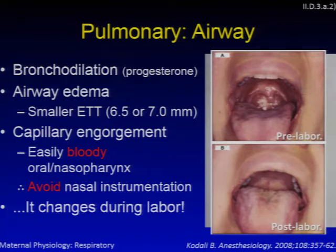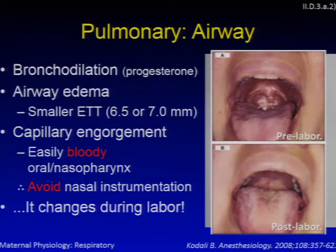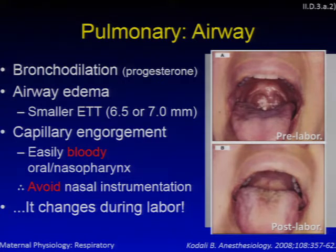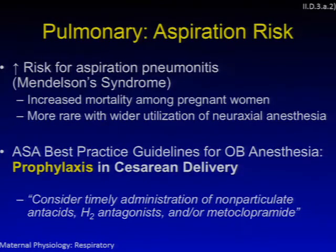Pulmonary and airway changes during pregnancy also change dramatically during labor. A figure shows a normal healthy non-preeclamptic woman whose airway exam before labor is very favorable — nobody would hesitate to intubate. After labor, the changes from Valsalva maneuvers and oxytocin-associated water retention can make the airway exam very unfavorable. Pregnant women are more likely to die from aspiration pneumonitis during induction and extubation from general anesthesia, though this risk has dropped due to more widespread use of neuraxial techniques.